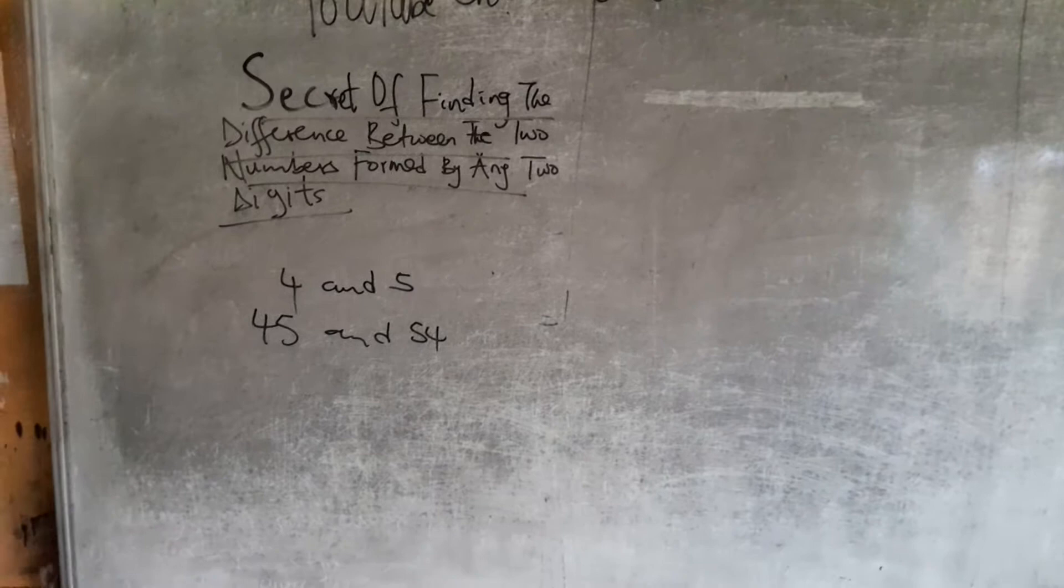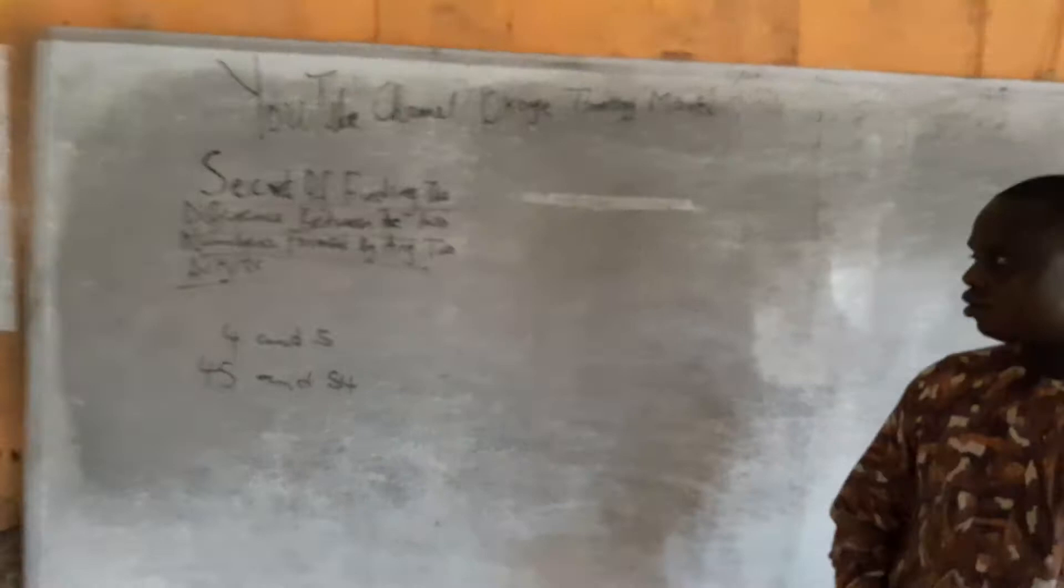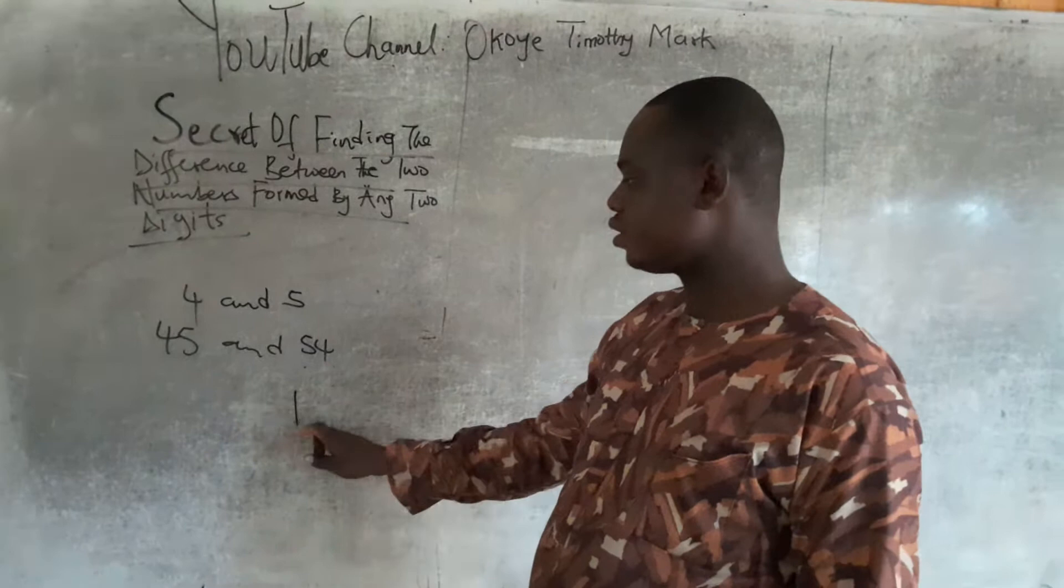To know the difference between these two numbers without using a calculator, all I need to do is subtract 4 from 5, and that is 1. Then I will multiply it by 9, and the answer is 9.